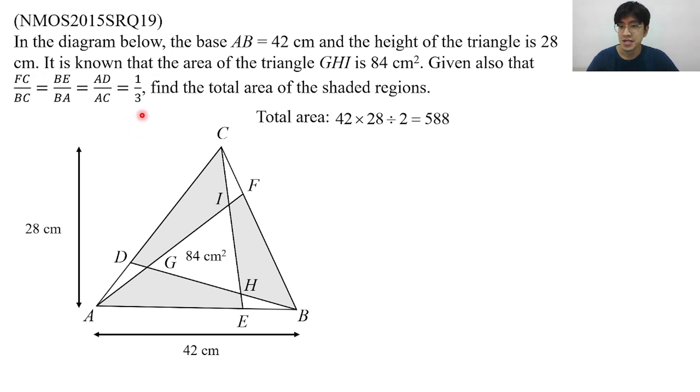The question tells us some ratio between the sides, so let me label them in this diagram. We know FC to BC is 1 over 3, so that means that this side and this side are in the ratio of 1 to 2. And BE to BA is also 1 to 3, so I can write down 1 to 2 over here and 1 to 2 over here.